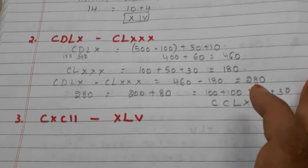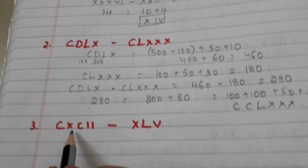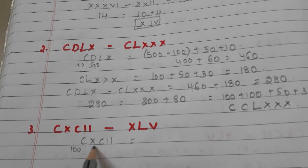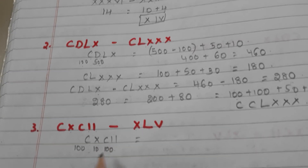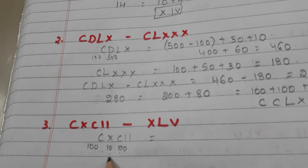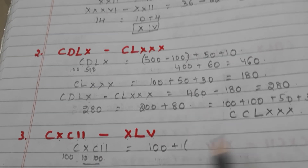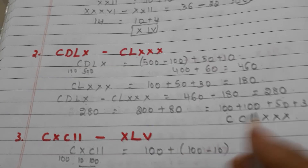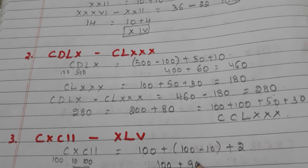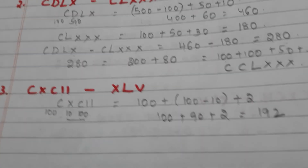Let us go to the last one: CXCII minus XLV. First take CXCII. C means 100, X means 10, C means 100. Here the smaller number X is in between two larger numbers, so we subtract the smaller number from the next bigger number: 100 plus (100 minus 10) plus II means 2, so 100 plus 90 plus 2 equals 192.